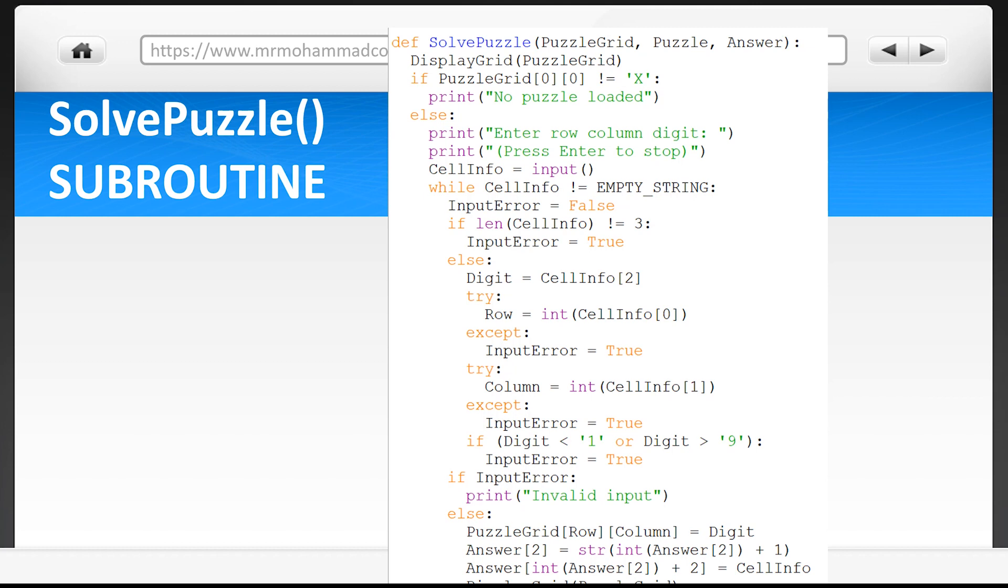Once we see everything works under the final else, the user's values are placed into the grid. Again you know how this code works from previous videos. The user is then prompted to enter more numbers until they choose to exit by entering the enter button or return button as their input.